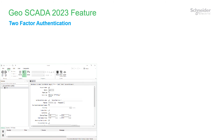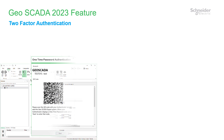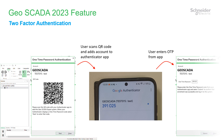Also in security, we now support two-factor authentication. Some governmental and standards bodies are now requiring that critical SCADA systems need to have two-factor authentication. Users can log in with their password and a six-digit code from their Authenticator app. You can use any compatible app and no internet is required.